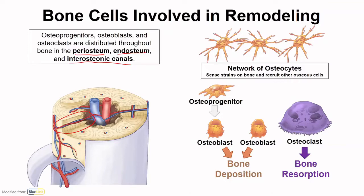The network of osteocytes will send strains on the bone. Something that I like to think of with this sort of process is thinking about the children's game Red Rover.